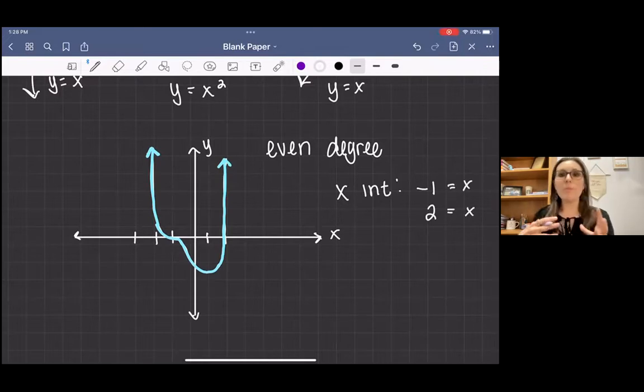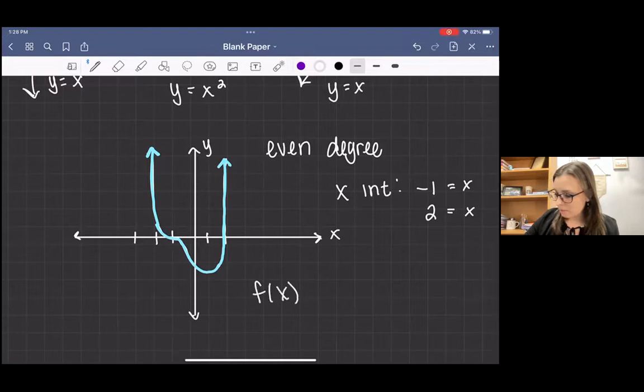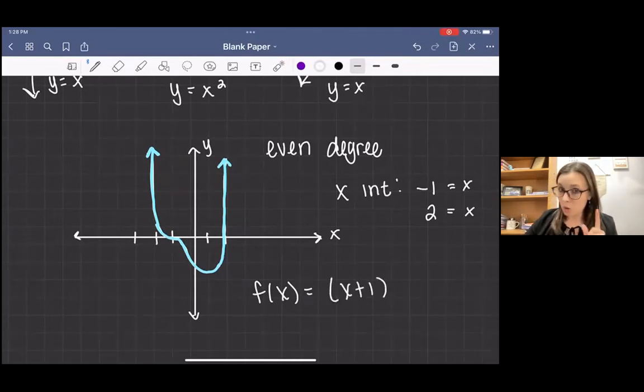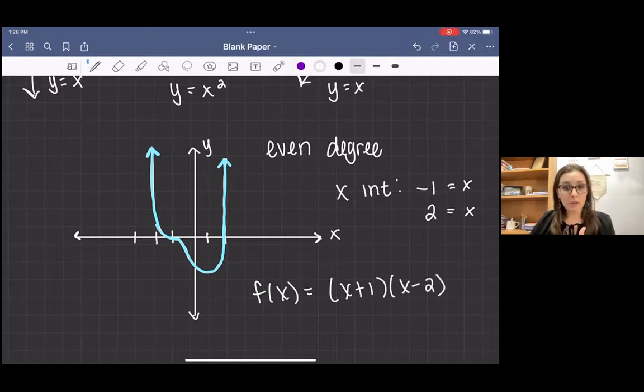Now, before I can write my polynomial, I can get a framework for it. So I can say f of x, it's going to be positive because my endpoints are pointing up. I don't have to do a negative out front. I can do x plus one, I know will be one of the factors, and x minus two will be the other factor.